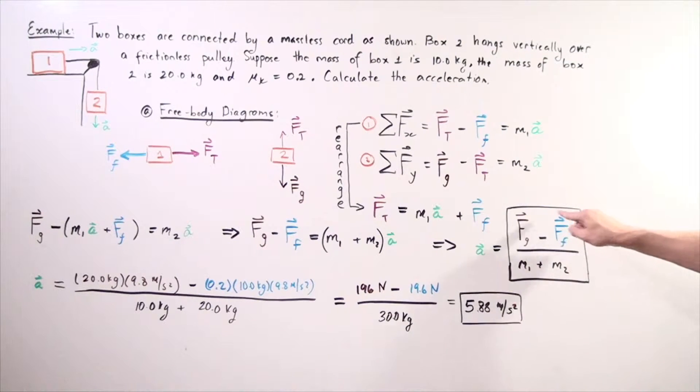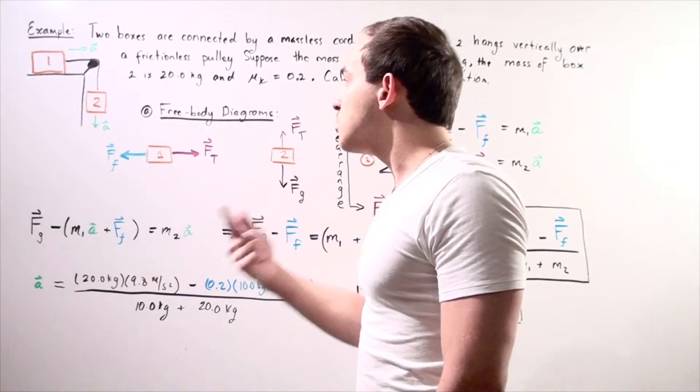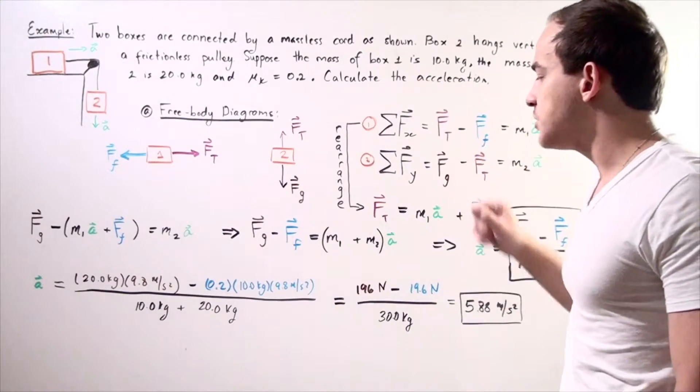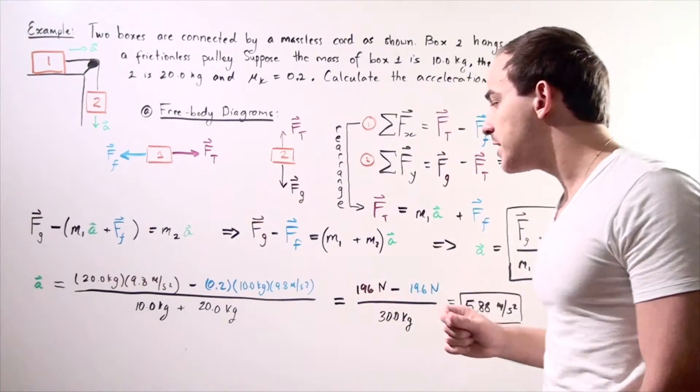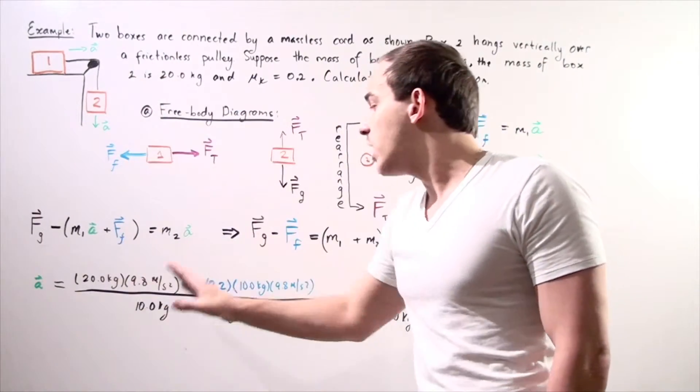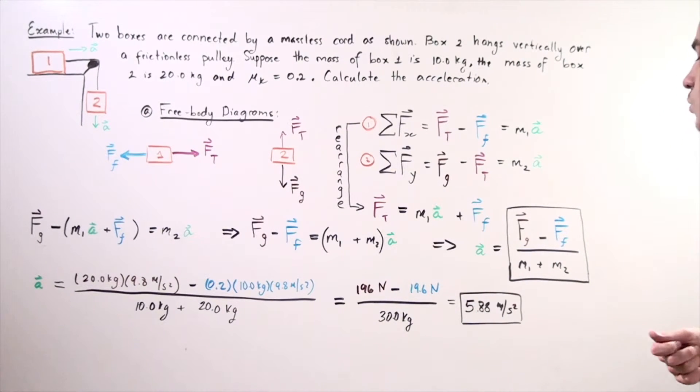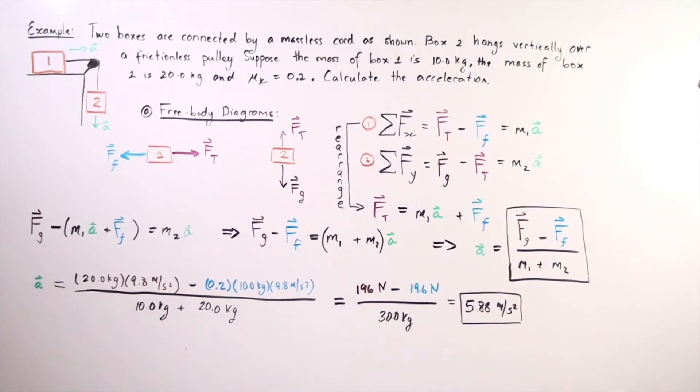Now I know every single value on the right side. I plug in my values: 20 kilograms object number two multiplied by 9.8 meters per second squared minus the coefficient of kinetic friction 0.2 multiplied by the mass of object one multiplied by G, 9.8 meters per second squared and divide that whole thing by my total mass of my system. Object one plus object two and that gives me 196 minus 19.6 Newtons divided by 30 kilograms and we get our acceleration of the system of box one and box two is 5.88 meters per second squared.